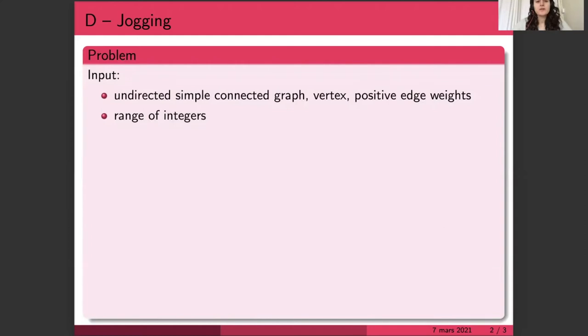Phoebe's neighborhood is given as an undirected graph that is simple and connected. One vertex describes her home, and the edges describe streets, so they have positive weights that describe the street lengths.